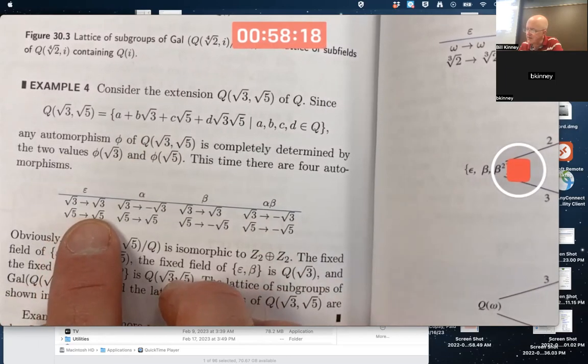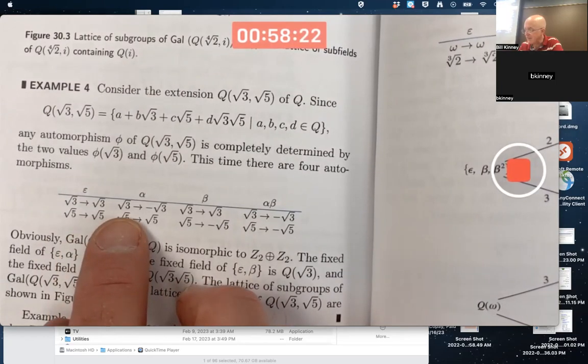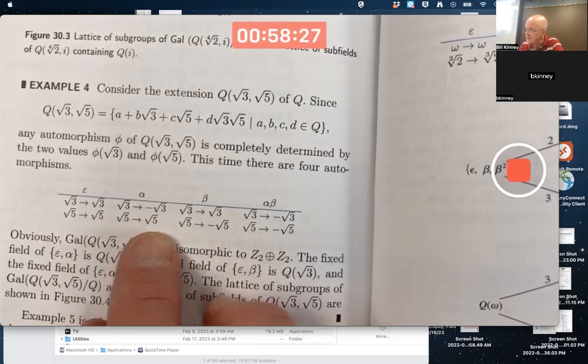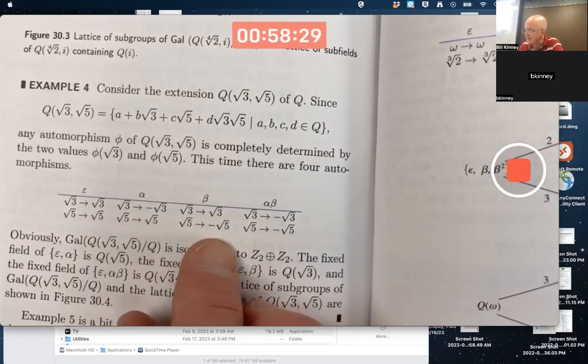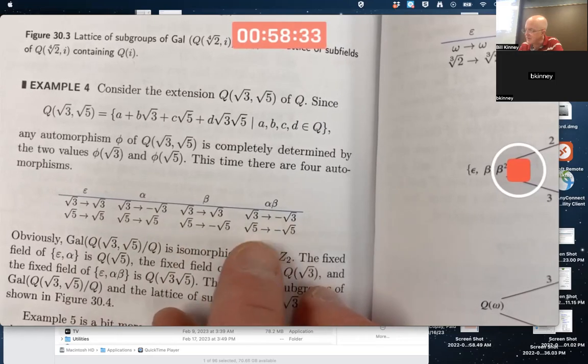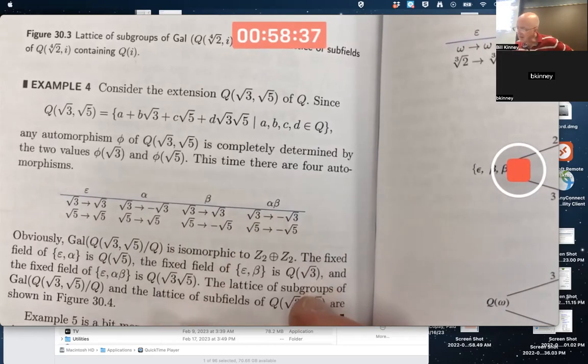Either map root 3 to itself and root 5 to itself, that's epsilon. Map root 3 to its opposite and root 5 to itself, call that alpha. Switch around the roles of root 3 and root 5, what they get mapped to in terms of the minus signs. Or map both of them to their opposites, which does happen to be alpha composed beta.